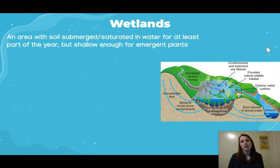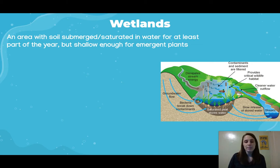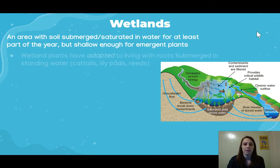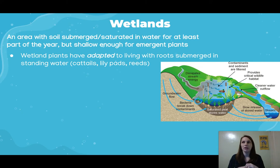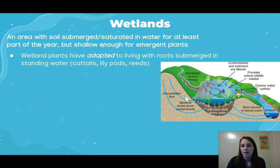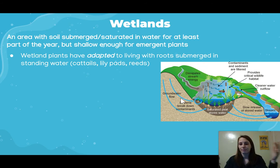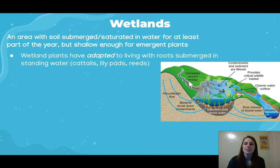Starting with wetlands — wetlands are an area with soil submerged or saturated in water for at least part of the year, but shallow enough for emergent plants. Wetland plants have adapted to living with their roots submerged in standing water. Think of plants like cattails, lily pads, and reeds. In the picture, water feeds into the area through groundwater or streams, and you can see cattails, lily pads, and ducks.